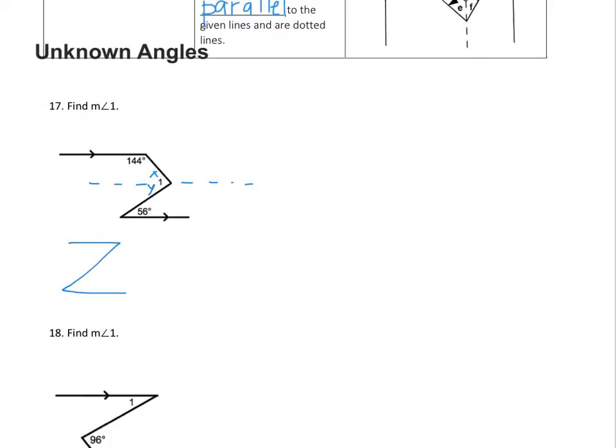If I look at finding angle X first, I notice that I have this backwards C going on. And I can see, again, parallel lines give me some angles that are supplementary. These two angles here, X and 144, are same side interior.